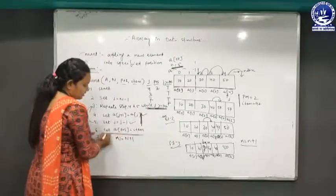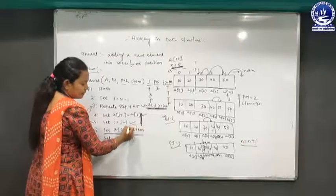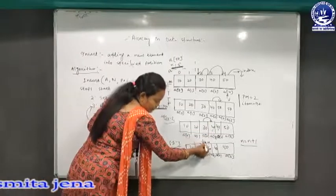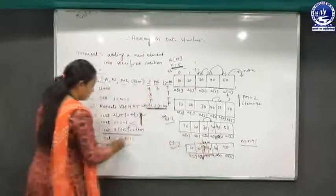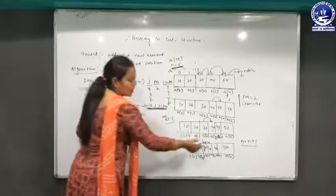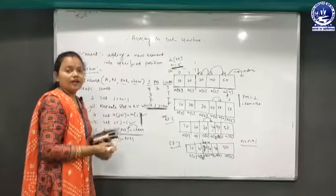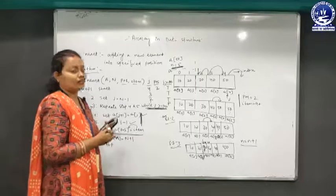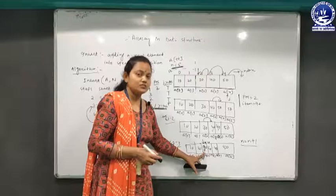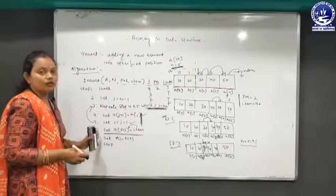After exiting the loop, step 6: set a[pos] equals to item, meaning a[2] equals 90. We insert the item 90 at position a[2]. Then step 7: set N equals to N plus 1, incrementing the array size from 5 to 6. After inserting, the array elements are 10, 20, 90, 30, 40, and 50. The value 90 is successfully inserted at the specified position 2.